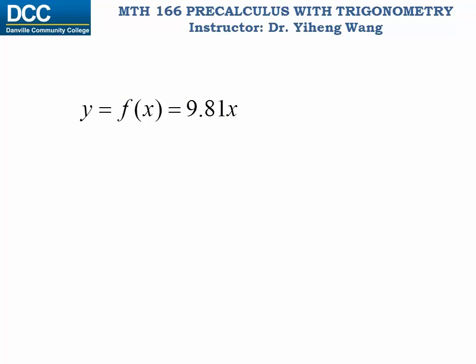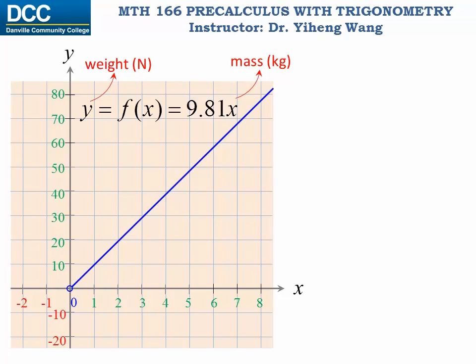However, for this exact same equation, if we say it now represents the weight of an object in Newtons as a function of the mass of an object in kilograms — in other words, multiply the mass by 9.81 to get the weight in Newtons — then this function has a physical meaning and therefore must make sense physically. Since it is impossible for an object to have zero or negative mass, the independent variable here cannot be zero or negative.